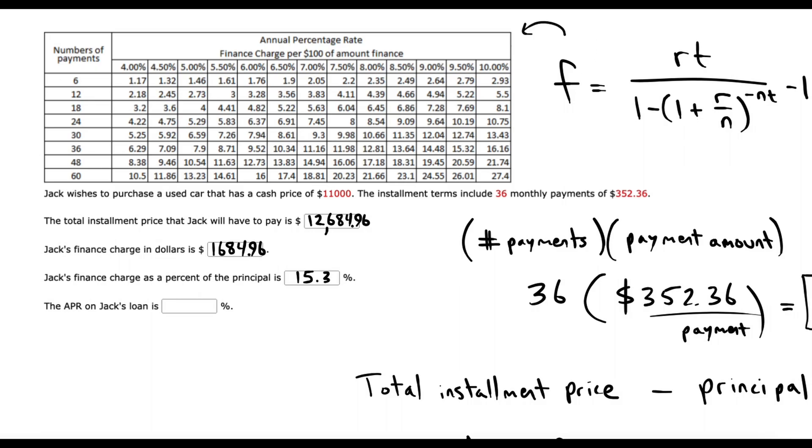So the easy way would, of course, be the table. We have a 36-month loan. So we want to look in the row for 36 months.